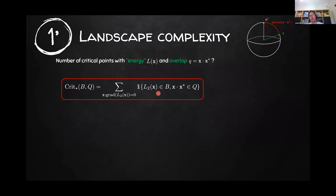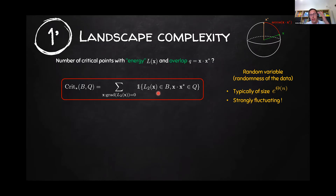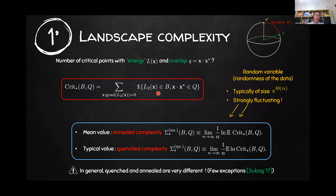Note that this is a random variable because the data is random. From the statistical physics analysis of these problems, we expect this number to be exponentially large. Since it's exponentially large, you have to be careful — in particular, it will not be well described by the mean or the expected value. In statistical physics language, these are the annealed and quenched quantities.